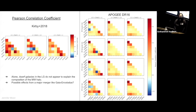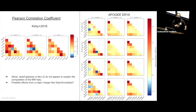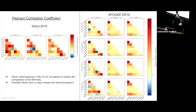Rather than removing Gaia Enceladus, could you identify it and see if it explains things? We can do two things: take Gaia Enceladus in whatever energy-angular-momentum space it occupies, look at what kind of pattern it produces, look at what kind of pattern the other stars produce, and see if that's able to replicate what we see in the dwarf galaxies.